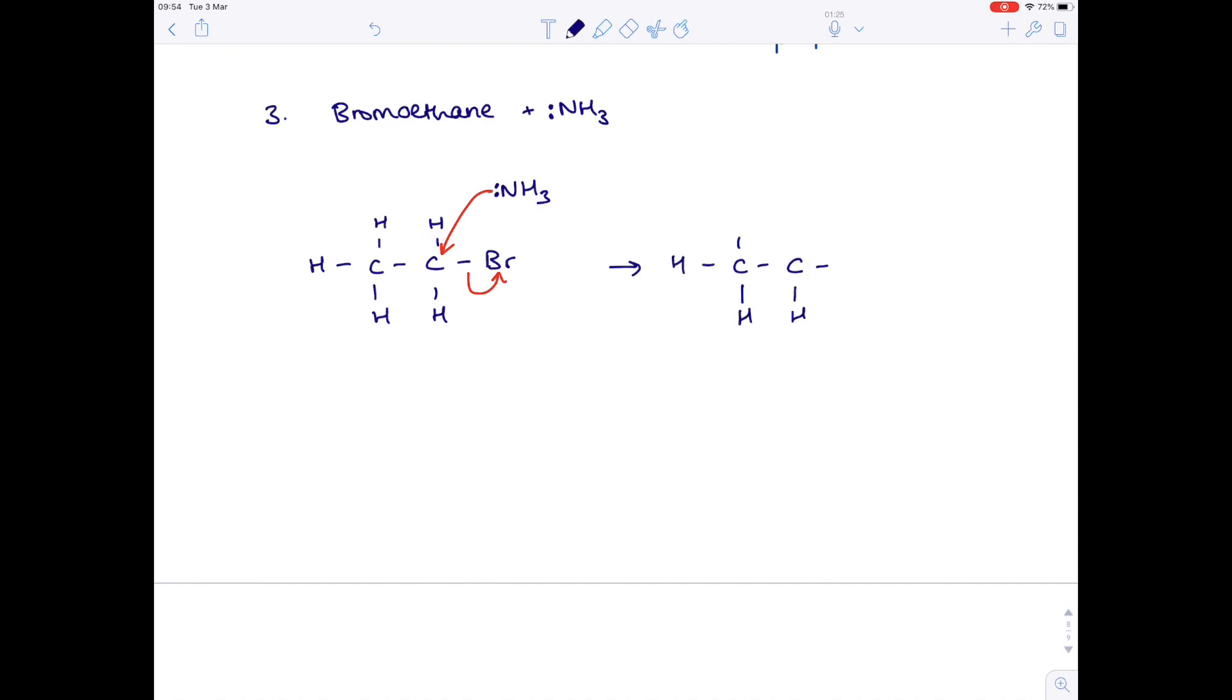Our intermediate stage therefore looks like this. So the NH3 will join. But the problem is because that nitrogen donated an electron, it's now electron deficient because it donated an electron to carbon, which is why it's a cation. And that's why we have an intermediate stage because obviously this can't be our final product.